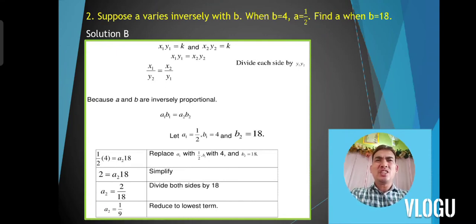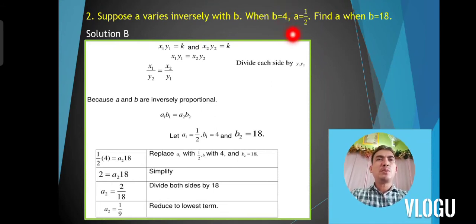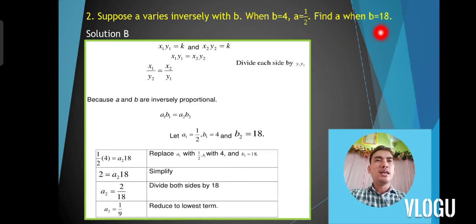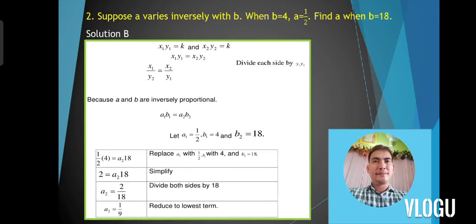Simply multiply 4 times one-half for the first equation, which equals 2, and that is equated to a times 18 or 18a. Divide both sides by 18, therefore you would have 1 over 9.